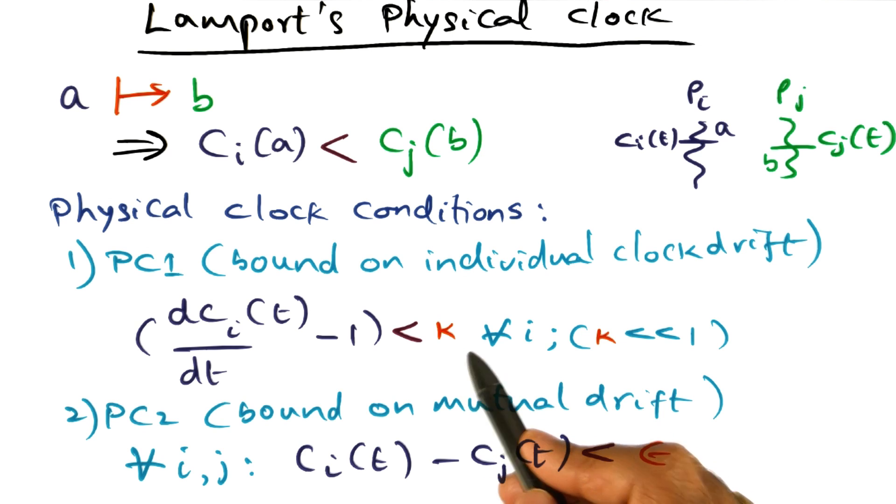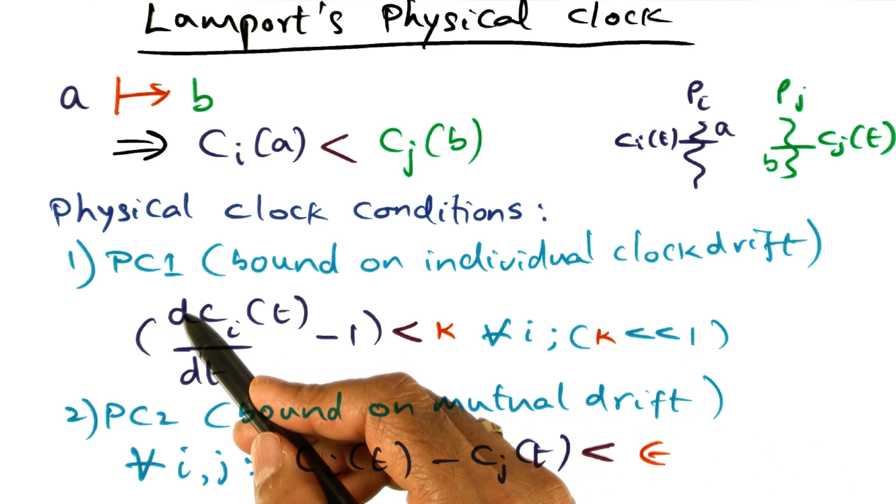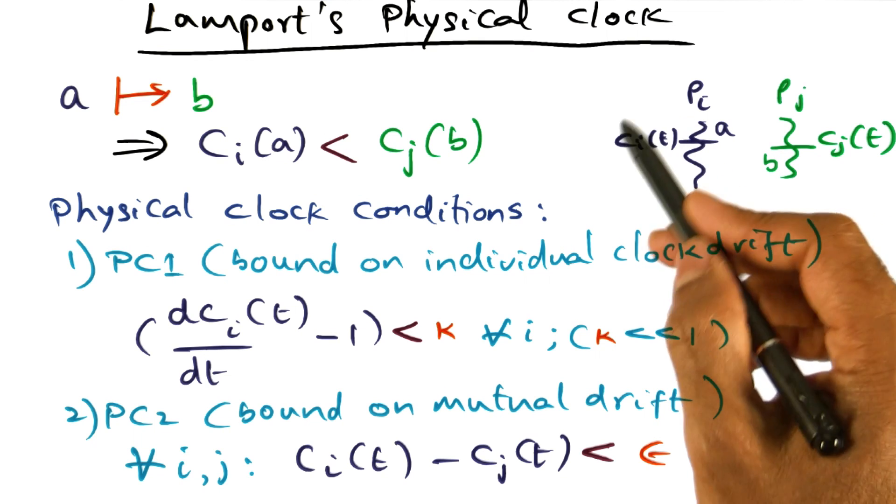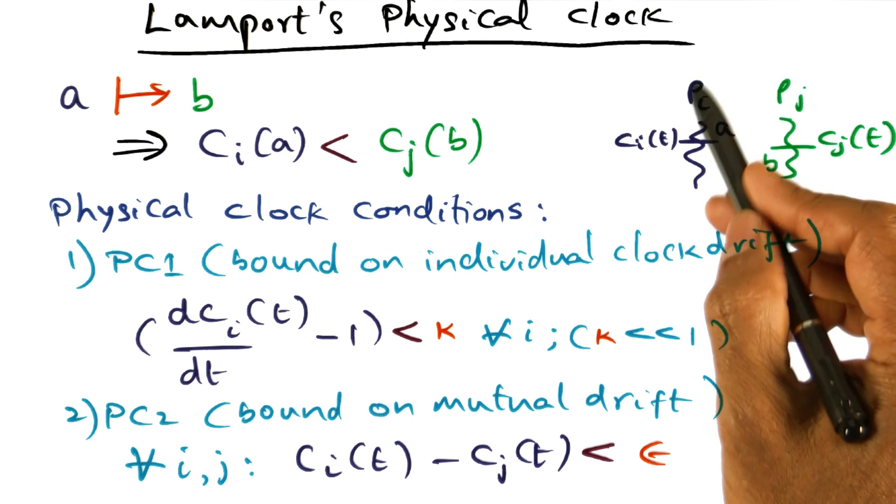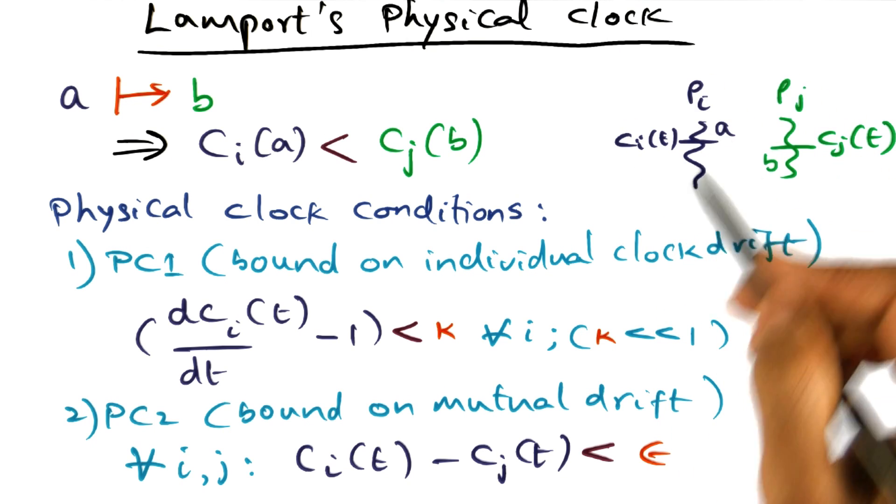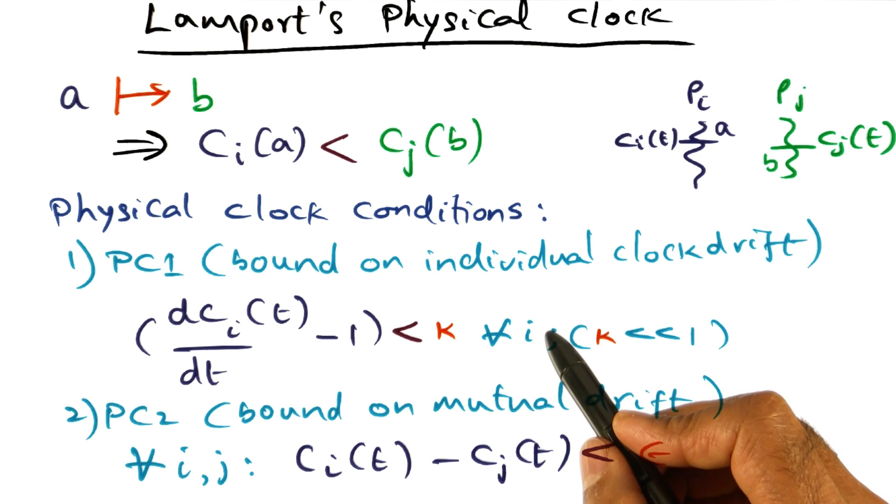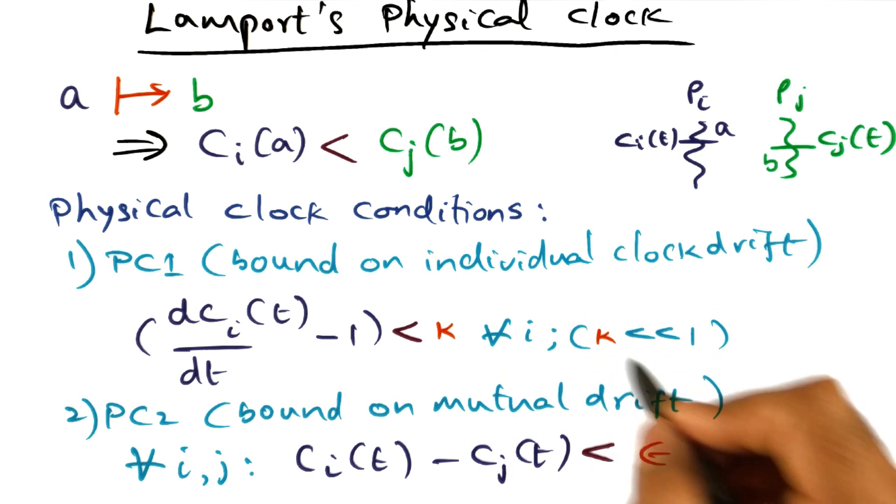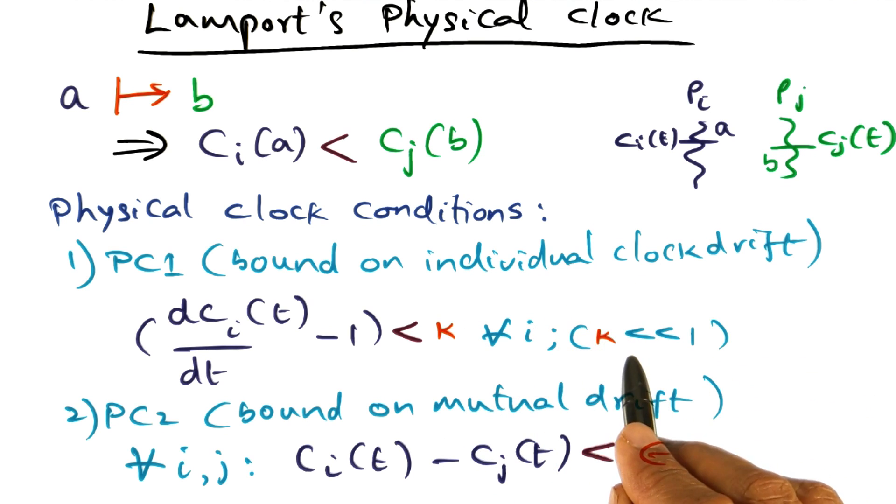So, in other words, what we are saying is all the clocks in the distributed system, whether we are talking about CI on PI or CJ on PI, all these clocks are running approximately correctly. So that the clock individual drift is very, very small.